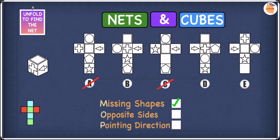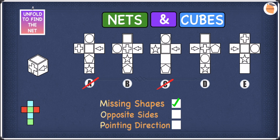In E, we have the square, the arrow, and the plus sign. The plus sign, the square, and the arrow are all on different colour sides, so none of them are actually on opposite sides. We managed to cross off A using opposite sides, so let's put a tick next to opposite sides.